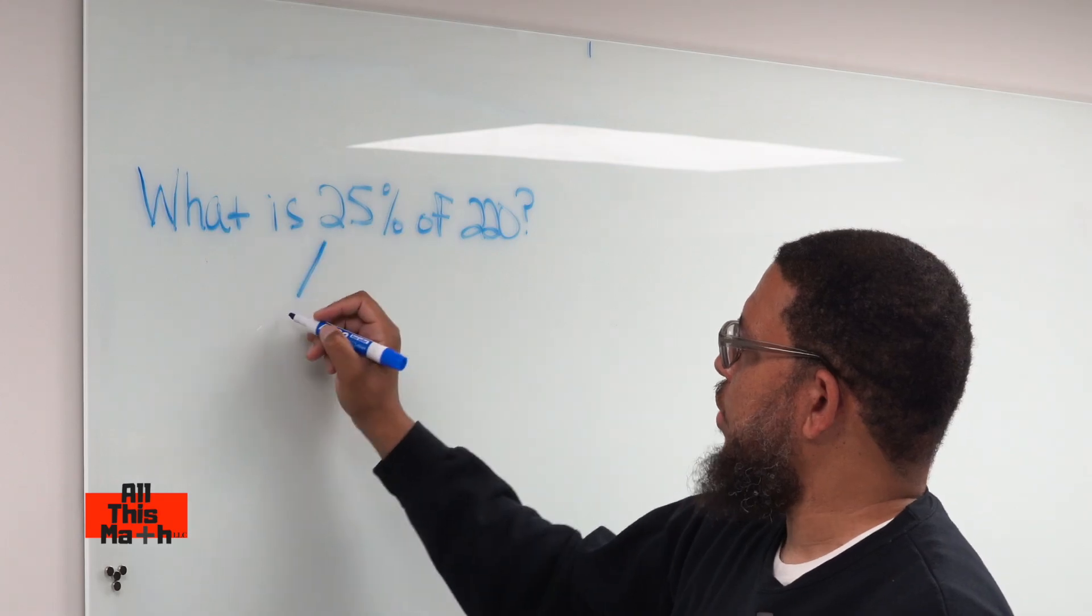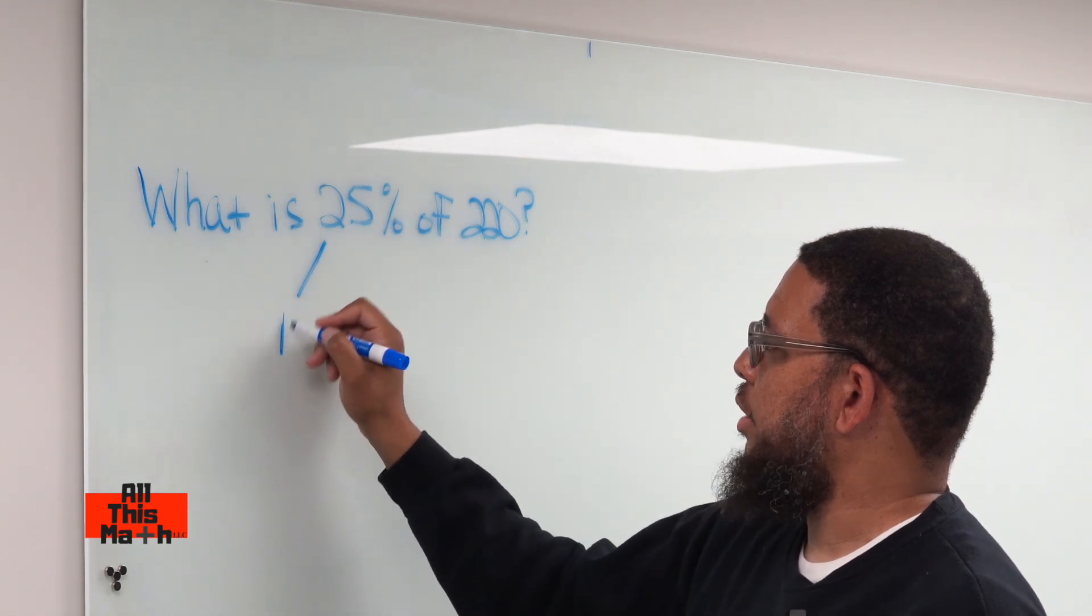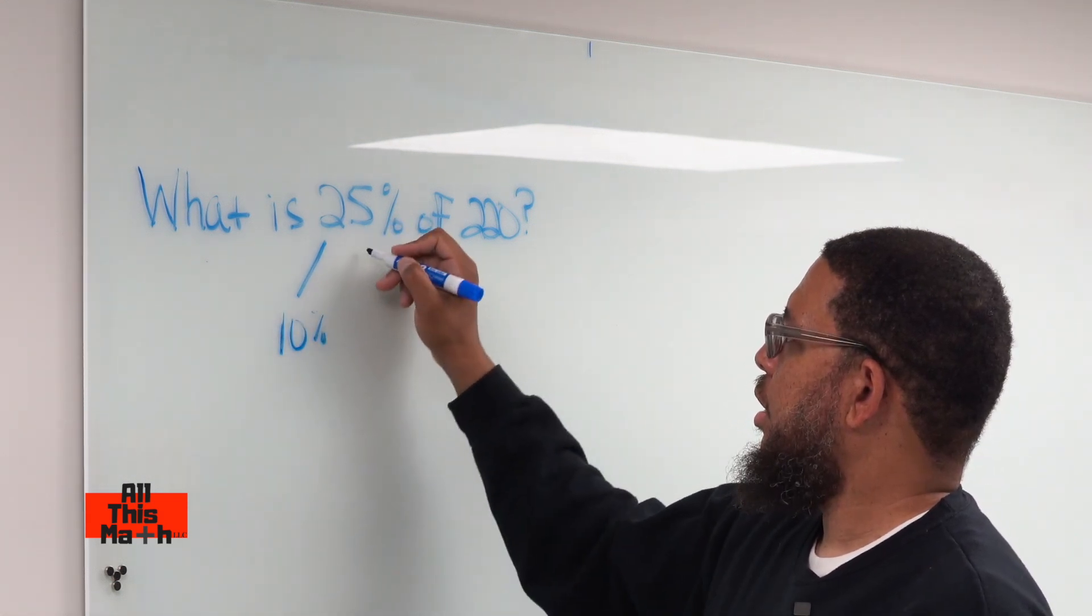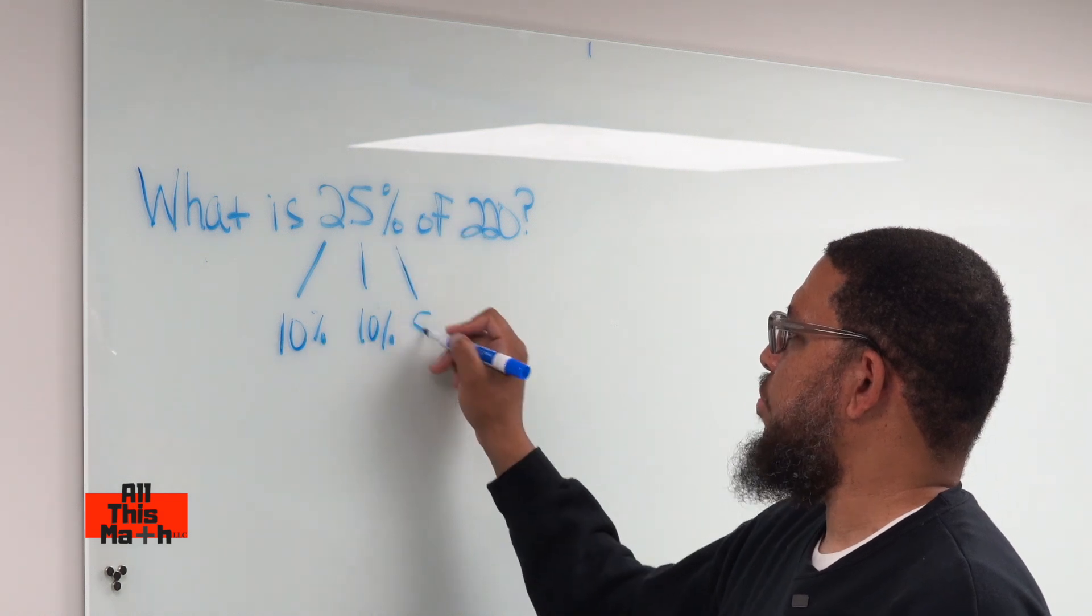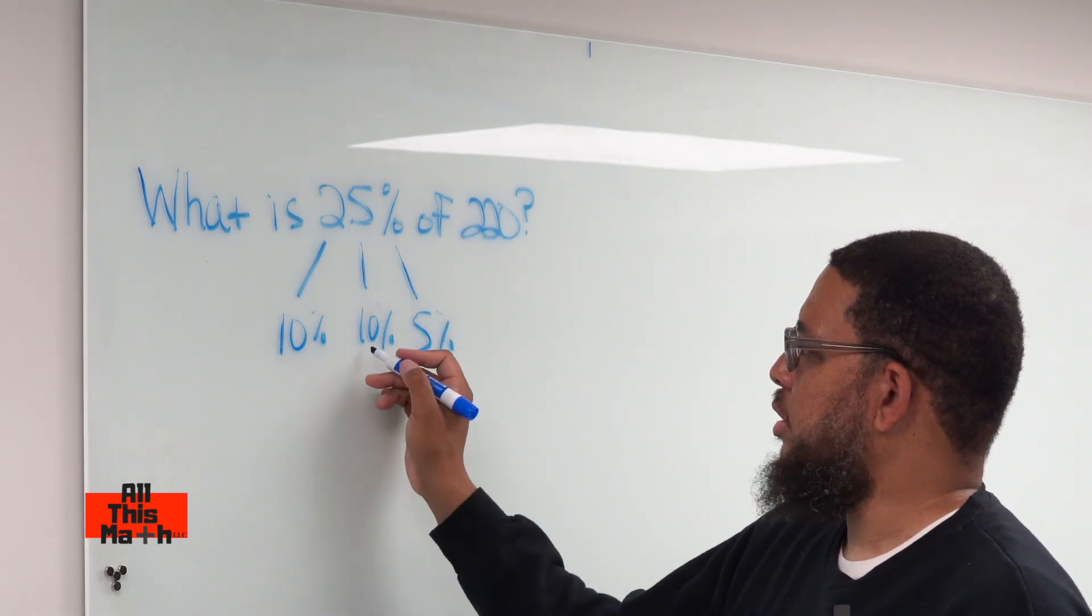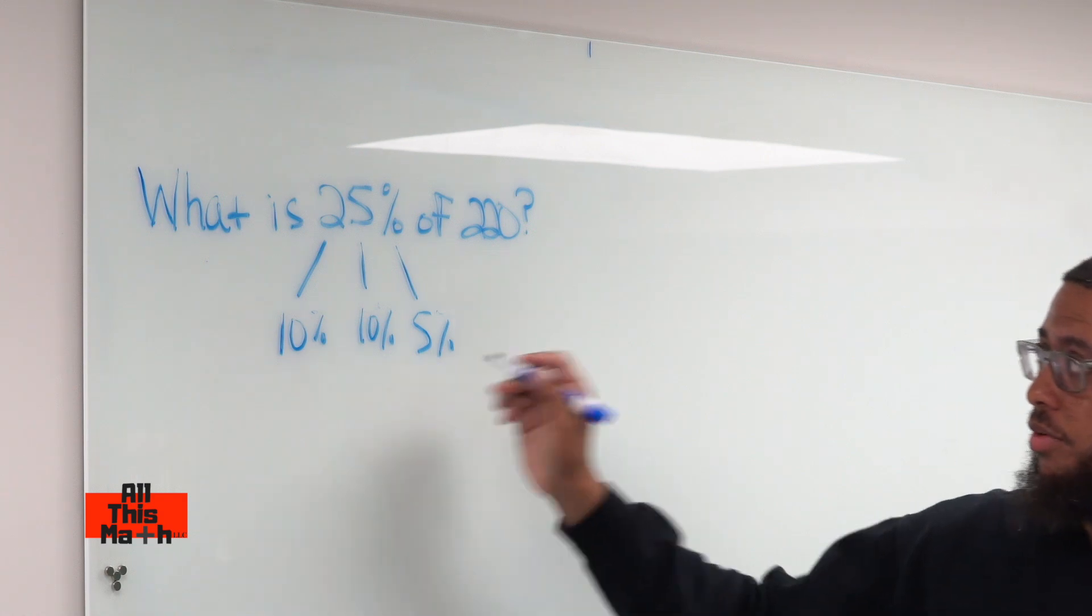So what we're going to do is break 25% down into 10%, another 10%, and then what's left over? 5%. Because 10 plus 10 is 20, and 20 plus 5 is 25.